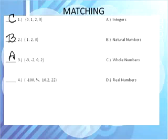For number 4, we have negative 100, 3 fourths, 10.2, and 22. And those are real numbers. Real numbers have your fractions and decimals and positives and negatives and whole numbers. Moving on. Hopefully you got all of those. If not, make sure you look over and notice the differences between them.